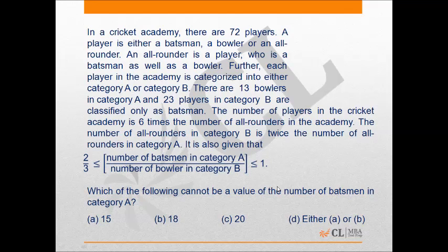The question states that there is a cricket academy with 72 players, and a player is either considered to be a batsman, a bowler, or an all-rounder.